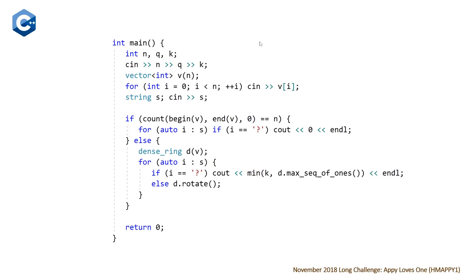Here is our C++ solution. At the top we read in n, q, and k, then declare a vector of integers of size n and read the values in, followed by reading string s. There's a corner case: if there are no ones in the sequence, we just output 0 for every question mark and skip exclamation marks. Otherwise we construct a dense ring by passing the vector to it, then loop over each character in s: if it's a question mark, output the minimum of k and the current max sequence of ones from the dense ring; otherwise, perform a rotate.